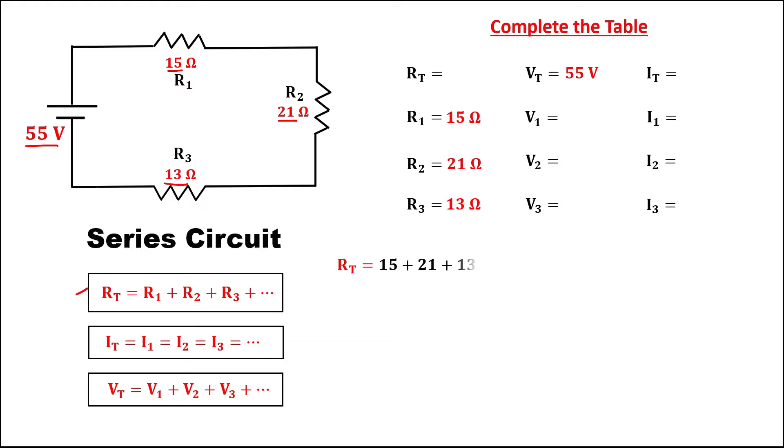To find the total resistance in a series circuit, just add all the given resistances, so that's 15 plus 21 plus 13, so the total resistance is 49 ohms.